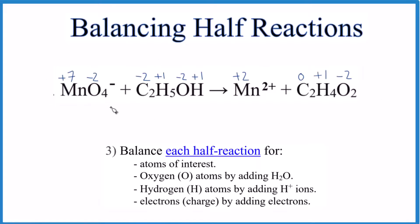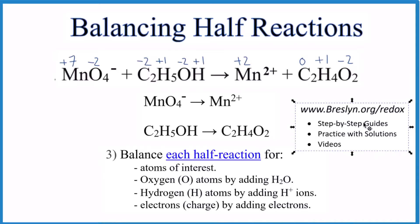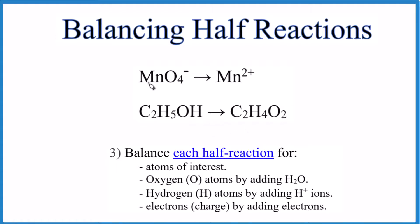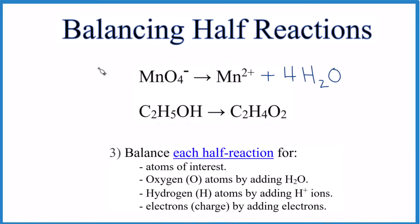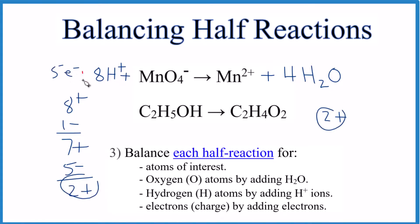We have our complete redox equation and we can write the half reactions. If you need help with half reactions or oxidation numbers, jump over to the website. Pause and balance these half reactions. For atoms: manganese to manganese — good. Two carbons, two carbons — balanced. For oxygens, we have four, so add four water molecules. For hydrogen ions, four times two is eight, so add eight H+ ions. For charge: eight times one plus gives eight plus, and the ion has a charge of one minus, giving seven plus on the left and two plus on the right. Add five electrons to the left, and both sides equal two plus — this half reaction is balanced.